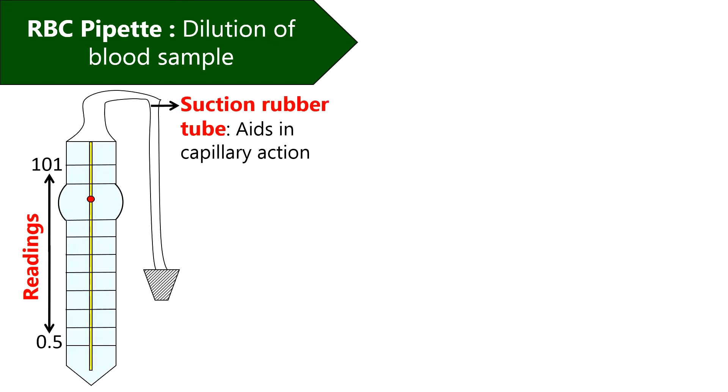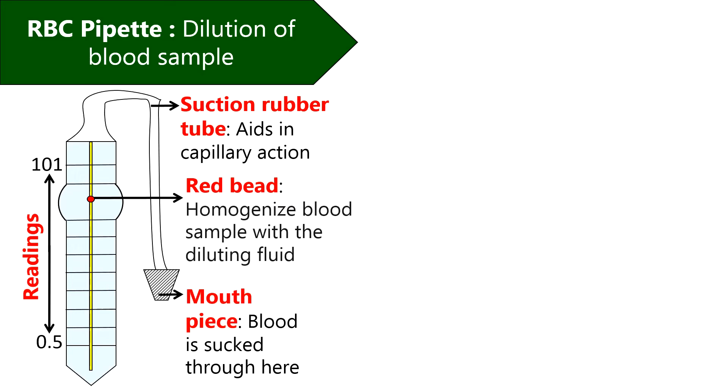Suction rubber tube aids in capillary movement of blood sample and diluent. Red bead is the characteristic feature of the RBC pipette that helps in homogenization of the blood and RBC diluting fluid. And through the mouthpiece, blood is sucked.